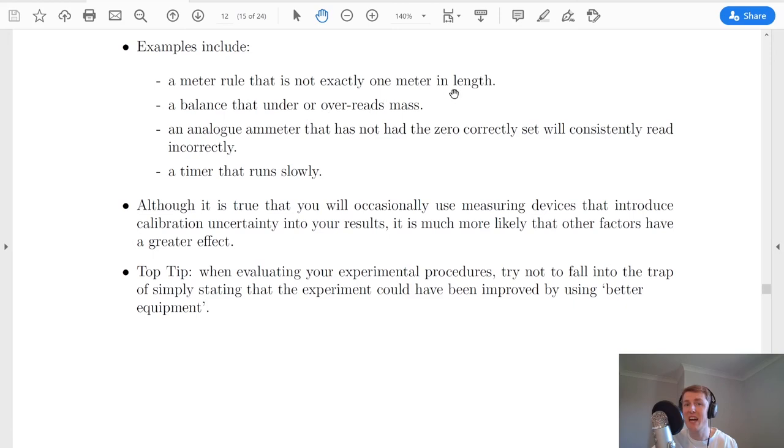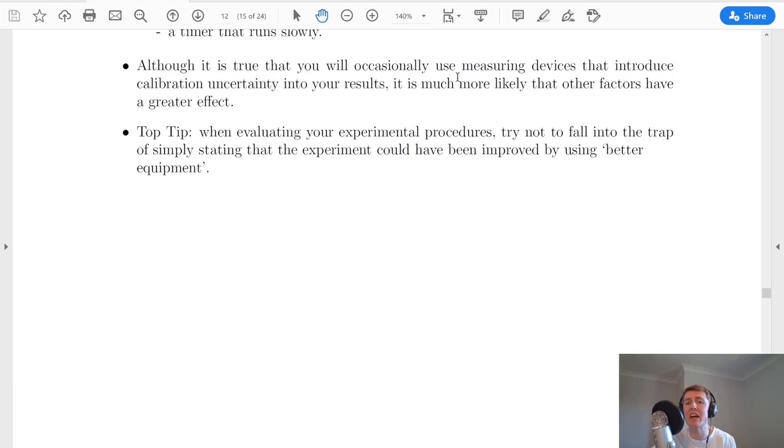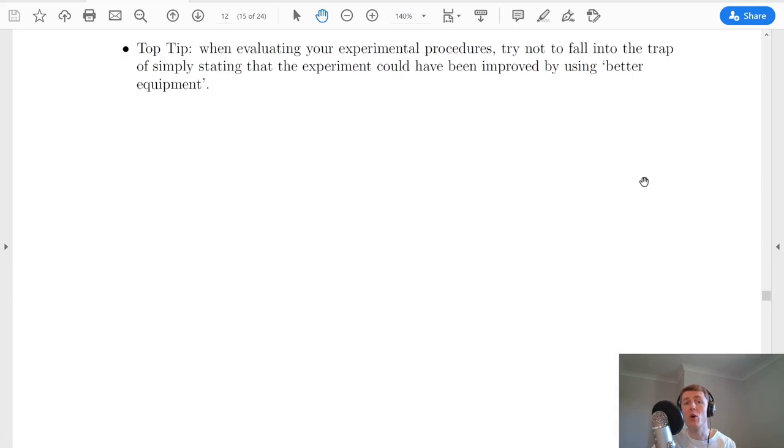Examples of calibration uncertainties might include a meter ruler that is not exactly one meter in length, a balance scale that under or over reads mass, an analog ammeter that has not had the zero correctly set, which will consistently read incorrectly, or a timer that runs slowly. Although it's true that you will occasionally see calibration uncertainties in your results, it's much more likely that other factors will have a greater effect on your results. So things like the scale reading uncertainty, the systematic uncertainty, or the random uncertainty, these will usually have a much bigger effect on your final results.